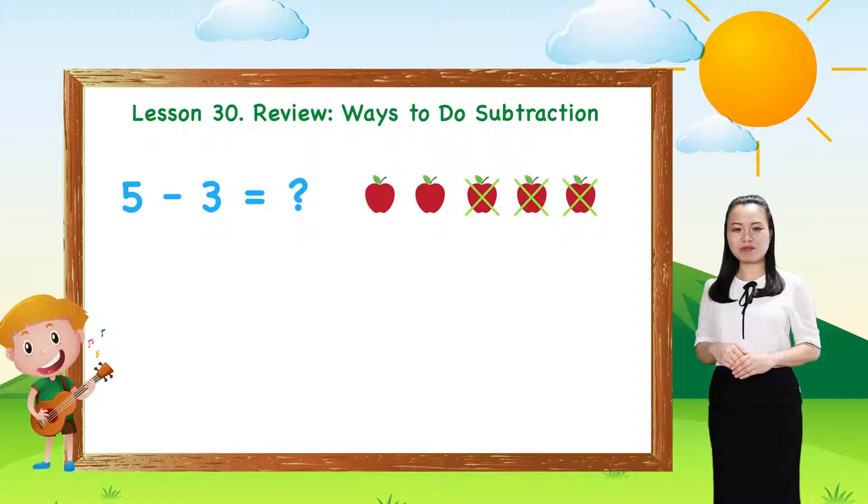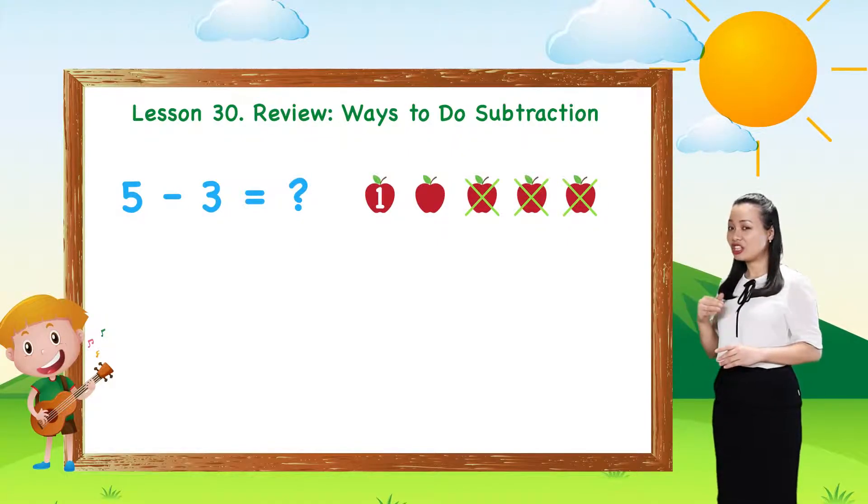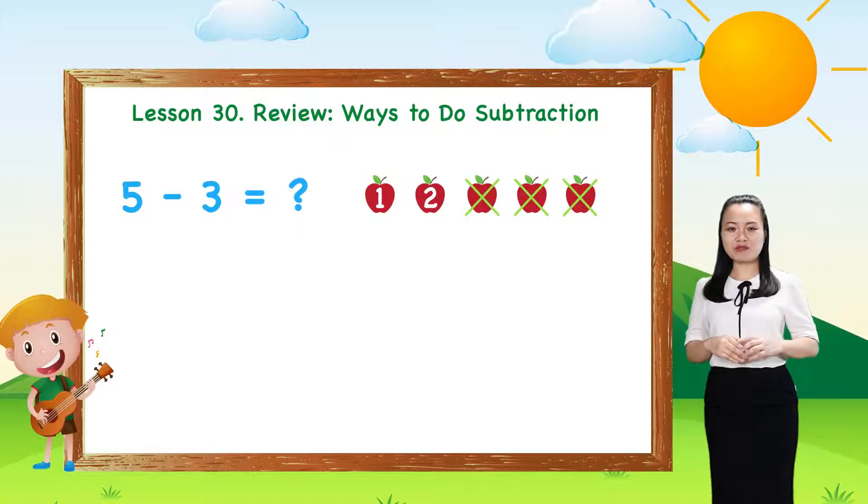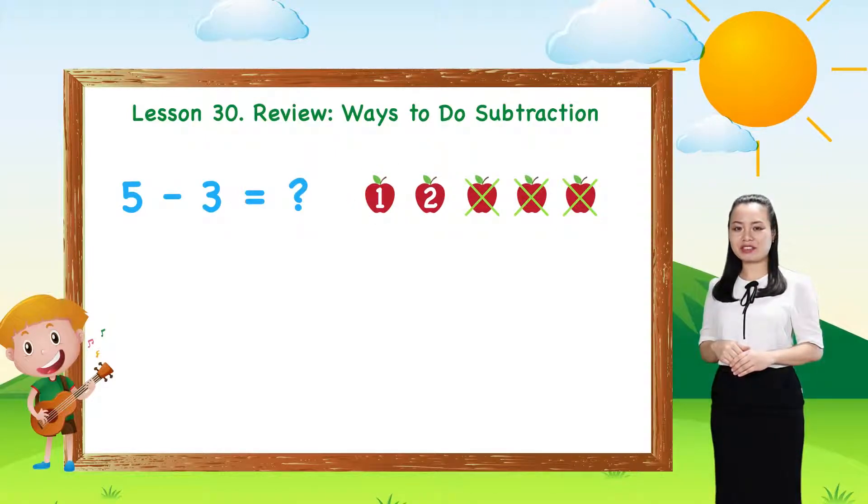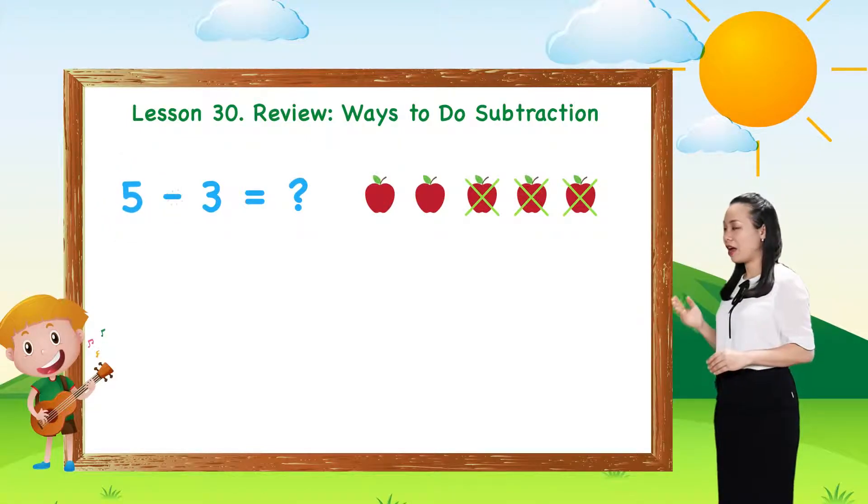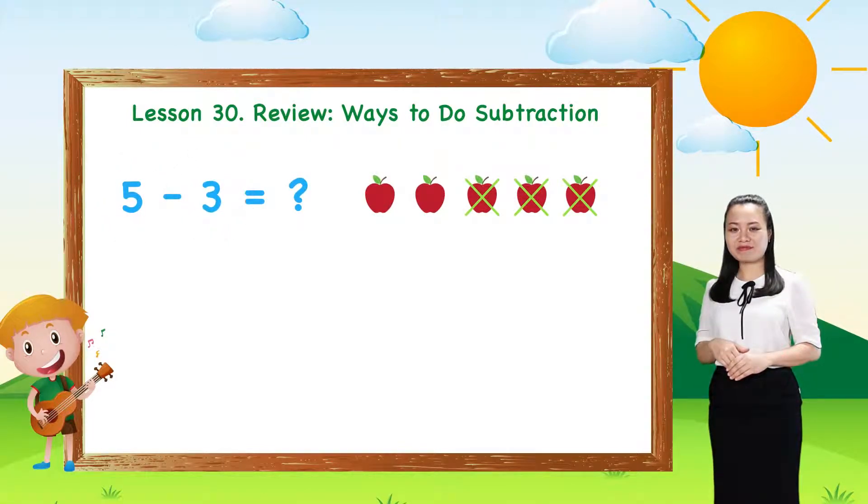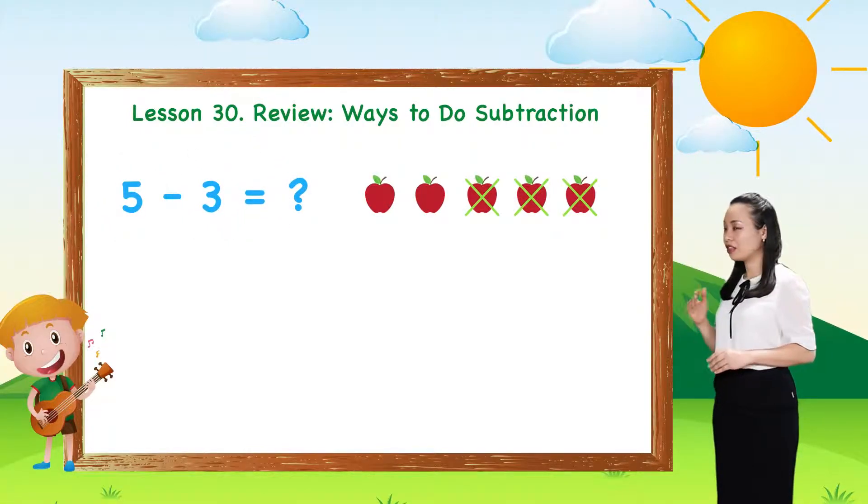Here, we have 1, 2. So, 2 apples left. Therefore, 5 minus 3 equals 2.